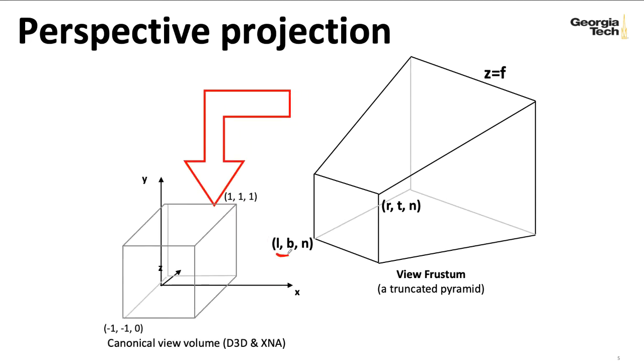So the left bottom and near and the right top and near coordinates, these are meaningful in this window that we're going to be projecting our 3D space here onto. Notice up here I'm just writing Z equals the far plane,